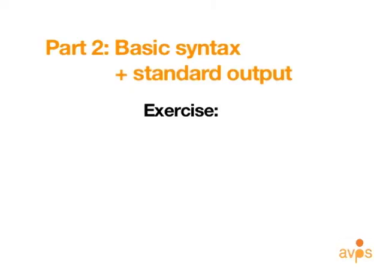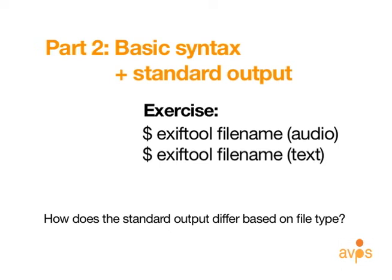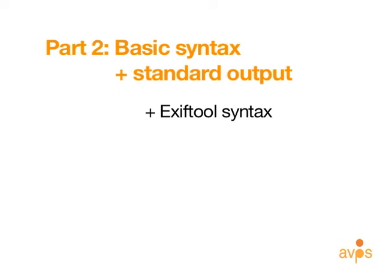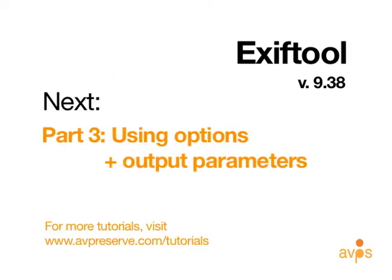As an exercise, try running EXIFTOOL on other file types, like audio or text. Note how the standard output differs based on file type. Now that we have an understanding of EXIFTOOL's basic command syntax and standard output, and have reviewed navigating a file system, we can start adding options and parameters to have more control over what information EXIFTOOL can view and manipulate. Please continue on to the next video in this series to learn about options for formatting and exporting output from EXIFTOOL. For the remainder of EXIFTOOL tutorials and other resources, please visit www.avpreserve.com/tutorials.